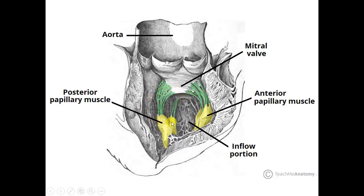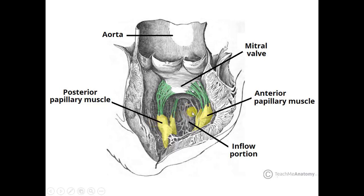The mitral valve also has chordae tendineae similar to the tricuspid. This valve lies coplanar with the tricuspid valve but posteriorly and superiorly to it. Both are atrioventricular valves — the tricuspid between the right atrium and right ventricle, and the mitral between the left atrium and left ventricle. The tricuspid has three leaflets and the bicuspid has two. There are three papillary muscles on the right side and two papillary muscles on the left side.